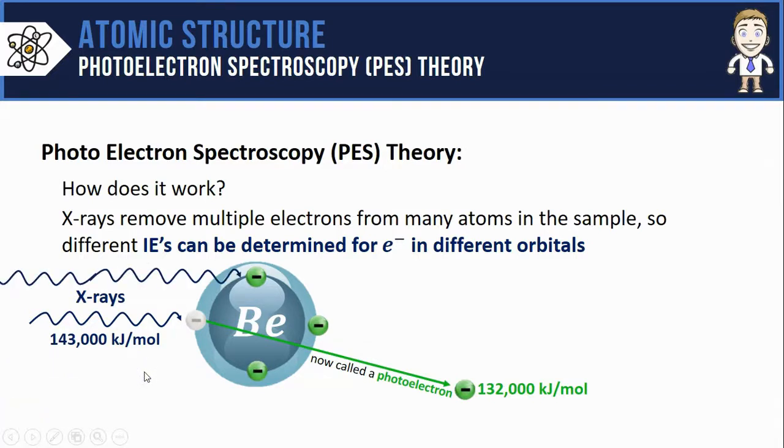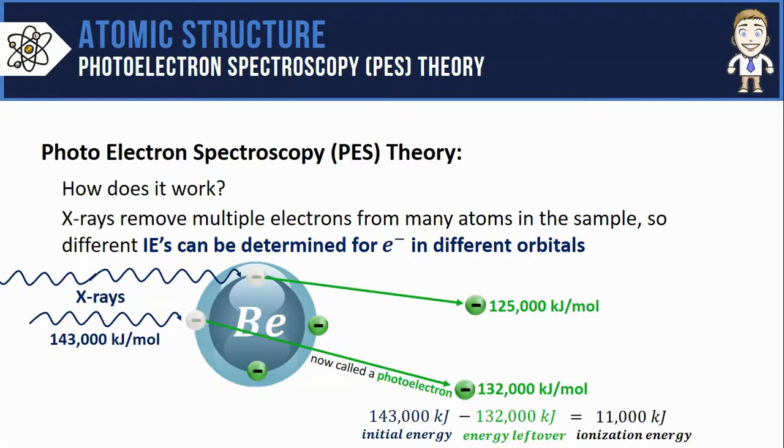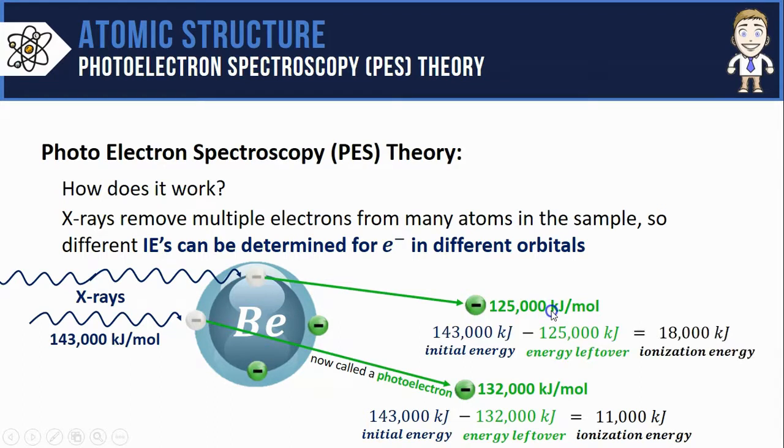So eventually some of the x-rays might collide with these inner electrons and eject them. Measuring their speeds, we'd calculate that they have 125,000 kilojoules per mole after being ejected. Remember for the first electron removal it took 11,000 kilojoules out of the initial 143,000 to eject this electron. Well here there's even less energy left over. If you subtract it out, you'll find that that's because it took 18,000 kilojoules of energy to remove this inner core electron.